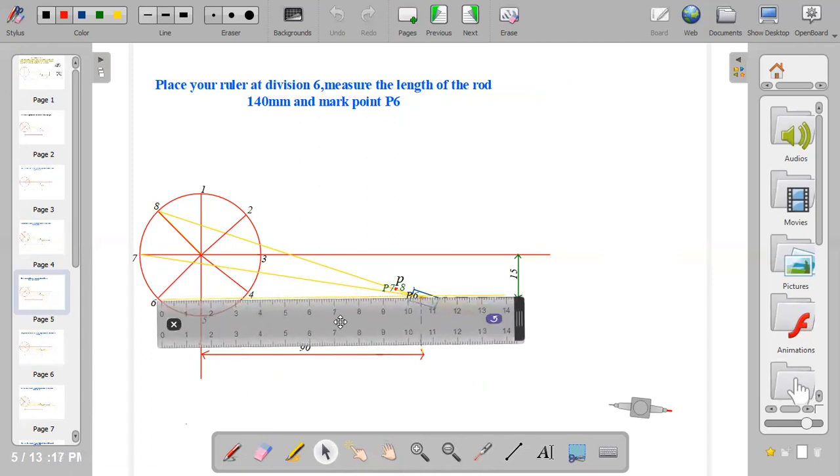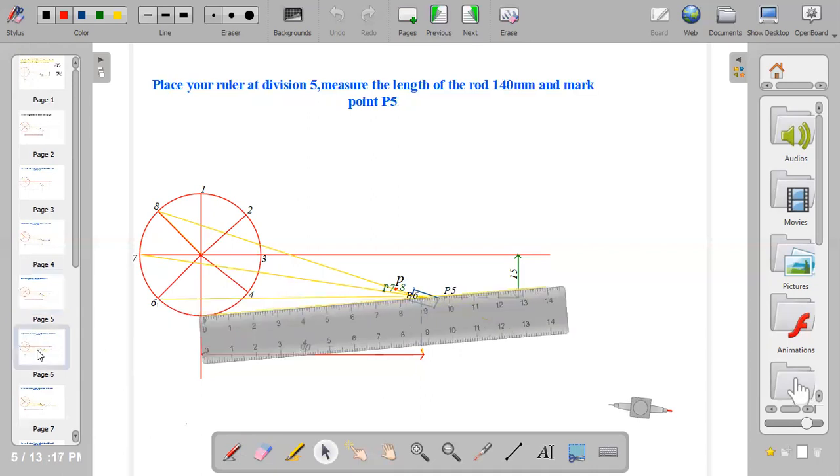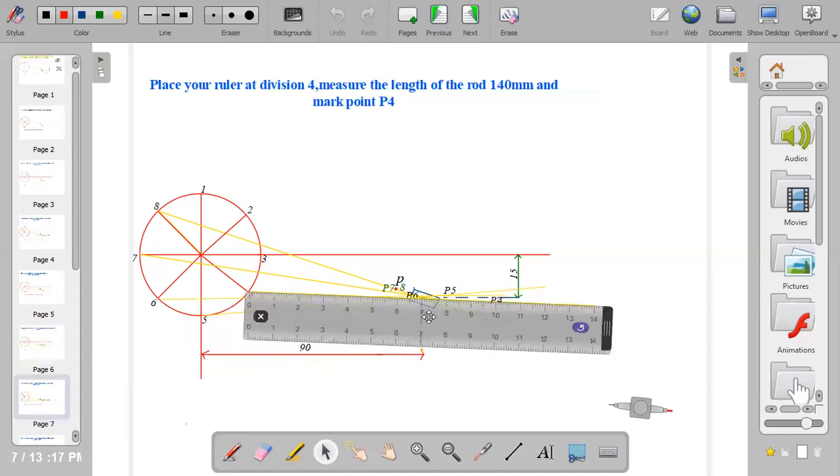From 7 you move to division 6. At division 6, also measure 140 which is the length of the rod, then dot point 100 which is the locus we are looking for. Repeat the same process at division 5. Place your ruler this way, measure the length of the rod 140, and at 100 you put P5. You go to division 4.